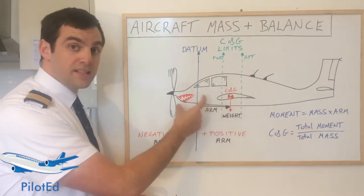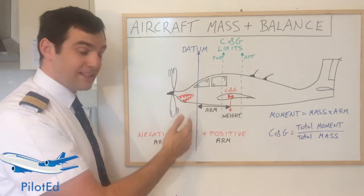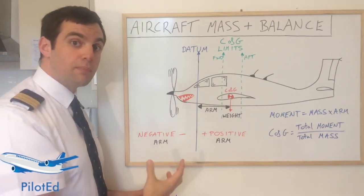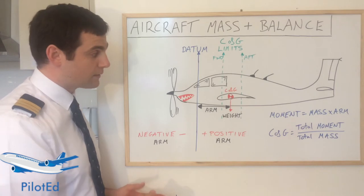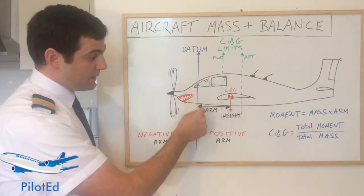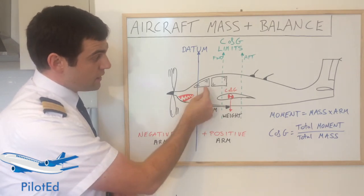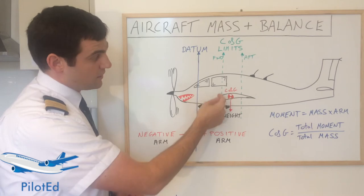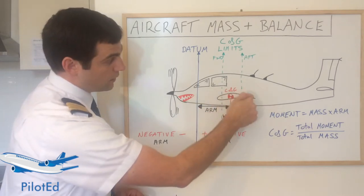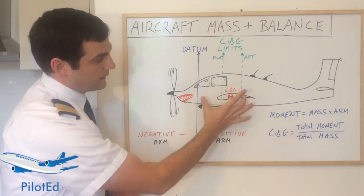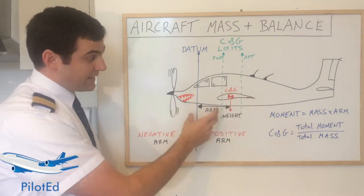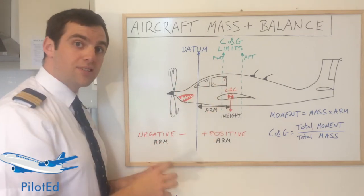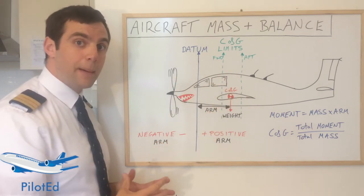The arm is the distance from the datum to the center of gravity of a certain mass on board the aircraft — whether that's an arm for the pilot, an arm for the passengers, or if you have a cargo hold at the back, an arm of that length. The arm is simply the distance from the datum to the center of gravity of a particular mass.